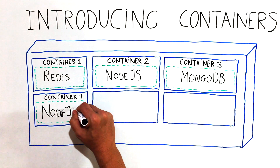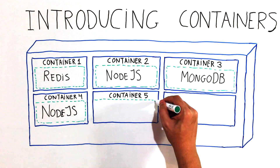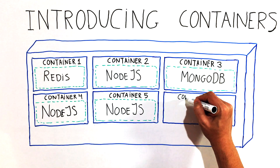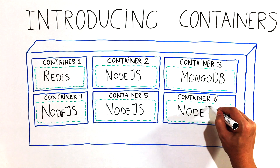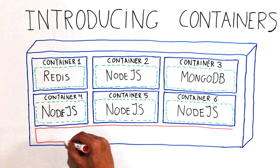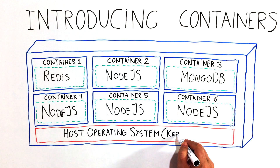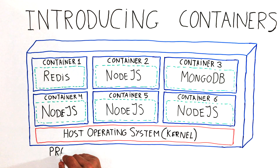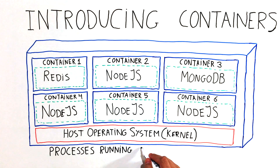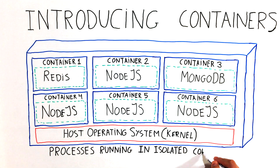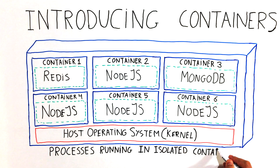Containers perform all the system calls on the exact same kernel running in the host operating system, so this single kernel is the only one performing instructions on the host CPU. In this picture, you can see one container running an instance of Redis, one container running an instance of MongoDB, and four containers running instances of a Node.js application. For each instance itself, it looks like it's the only one running in the machine and in its operating system.